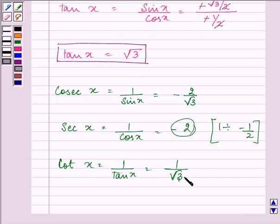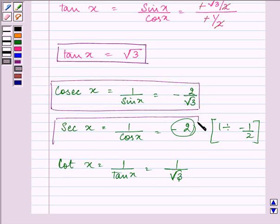The value of cot x is 1 by root 3. So these are the 5 values which were supposed to be found out in the question.